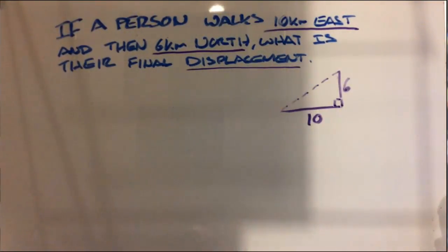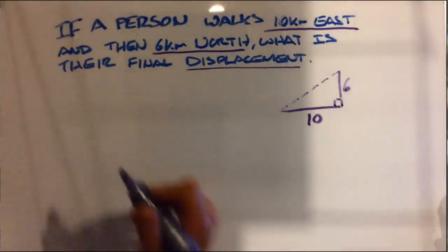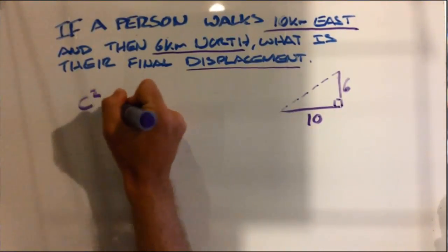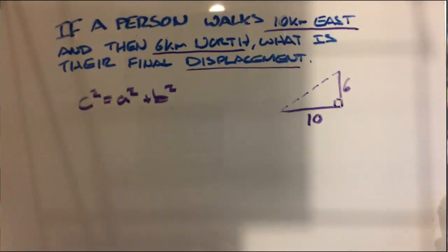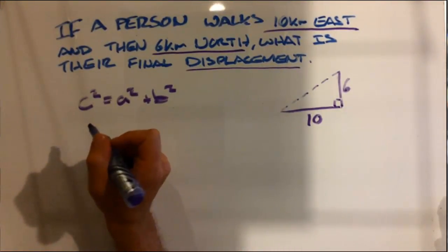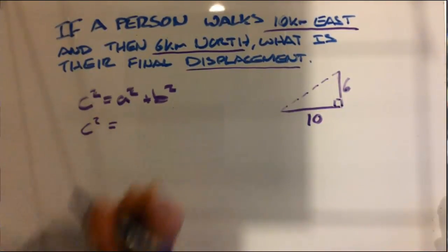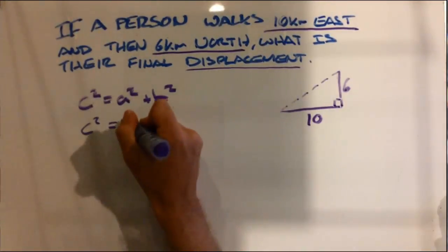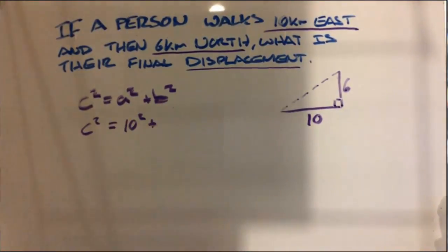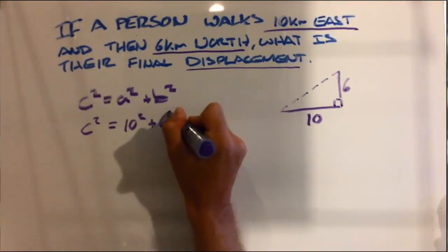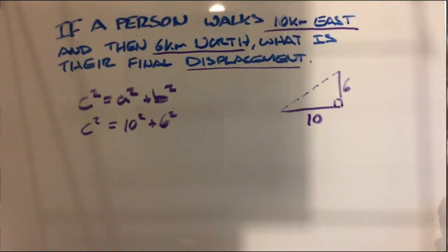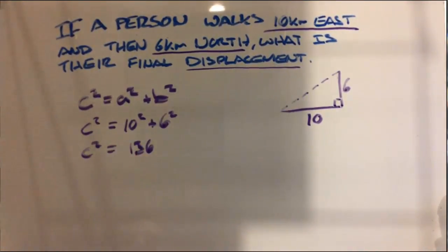When we see a triangle like this, we know we need to use the formula c² = a² + b². So c² is going to be equal to 10² + 6², which gives us 136.